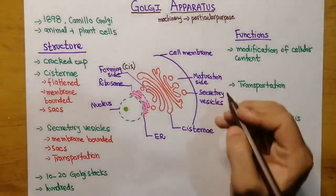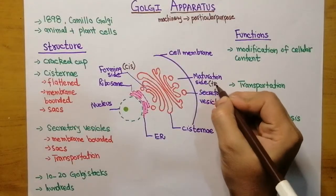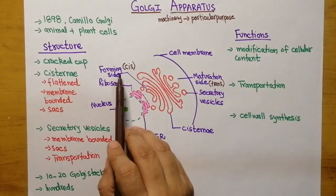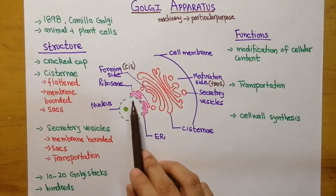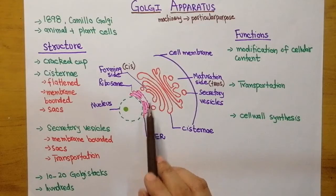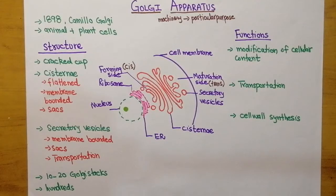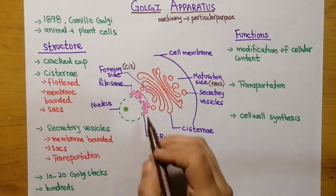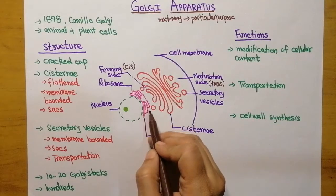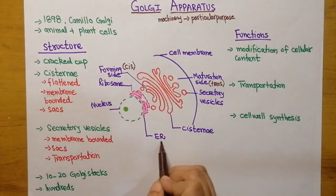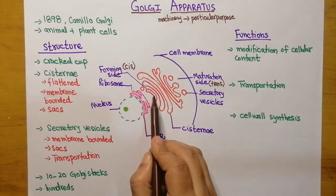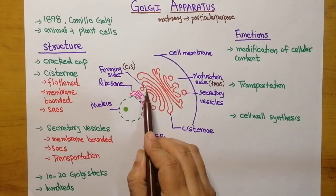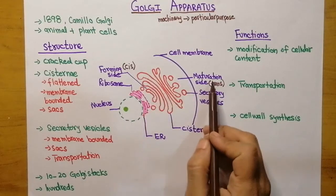The maturation side is also known as the trans side. The forming side is always facing towards the nucleus. The forming side means that new Golgi apparatus is forming at this particular side. Vesicles originating from the rough endoplasmic reticulum fuse together at the forming side and form new Golgi apparatus.